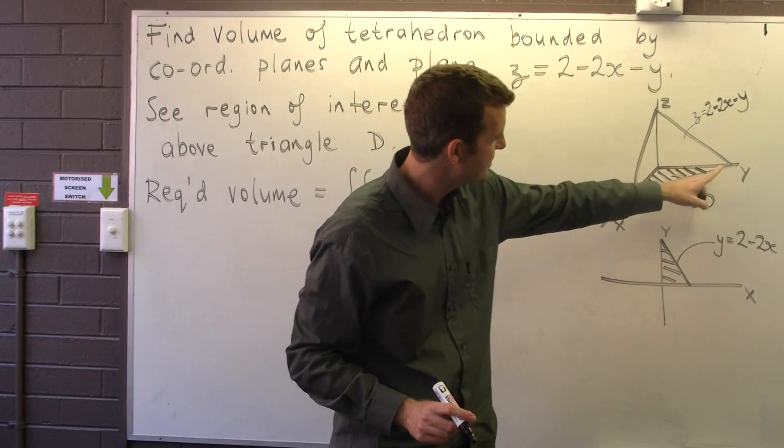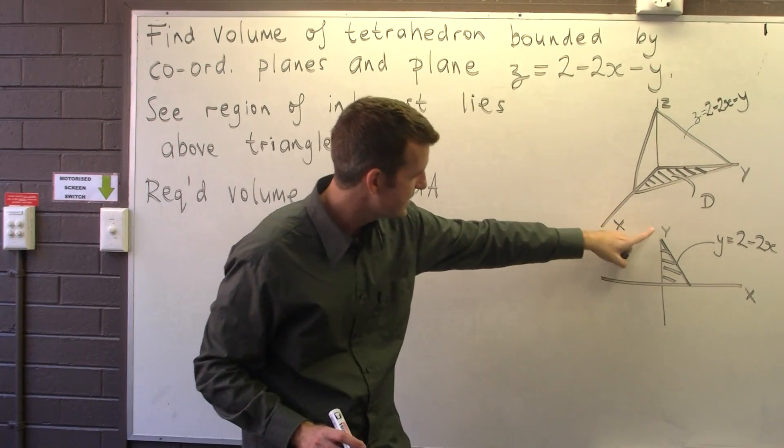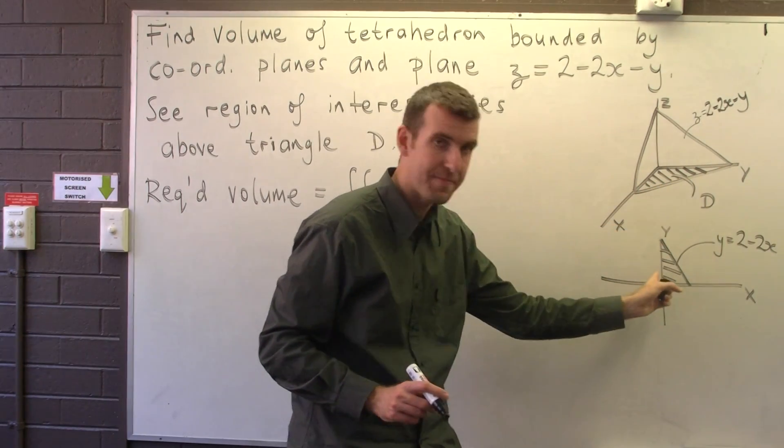So if you want to transfer this line over into the three-dimensional setting, this line here is this line here. We're looking down the barrel of the Z axis.